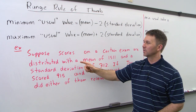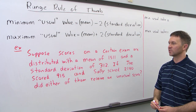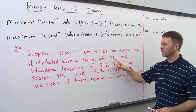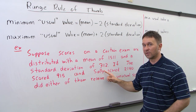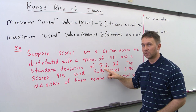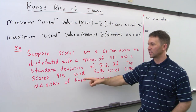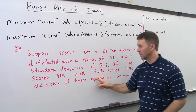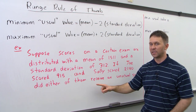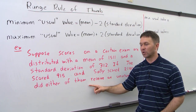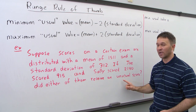In this particular example we're going to suppose that scores on a certain exam are distributed with a mean of 1511 and a standard deviation of 312. If Joe scored 915 and Sally scored 2140, did either of them receive an unusual score?